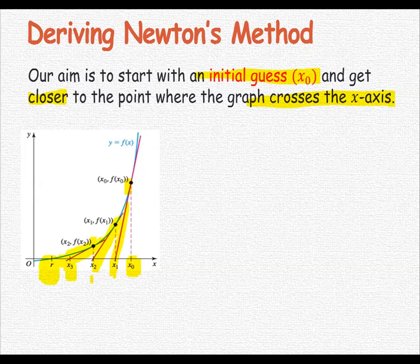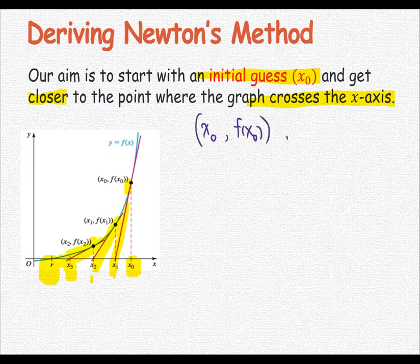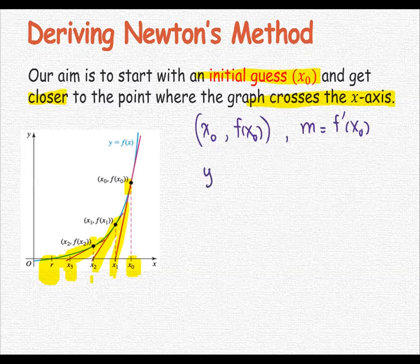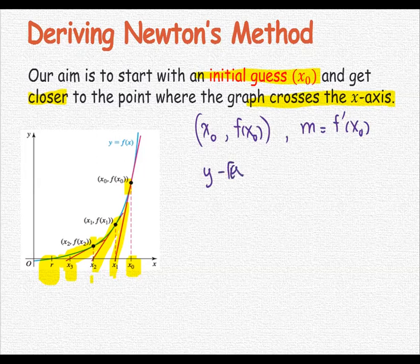With this concept, if we start with x₀, which is the initial point, the function value at x₀ forms the ordered pair, and the slope on the curve is f'(x₀). The tangent line will be found using the point-slope form: y - f(x₀) = f'(x₀)(x - x₀).